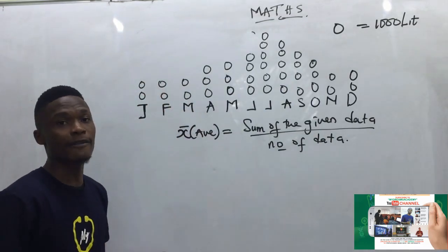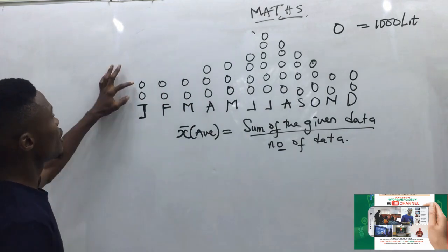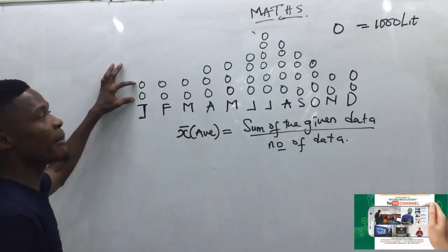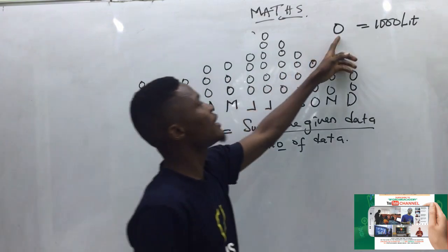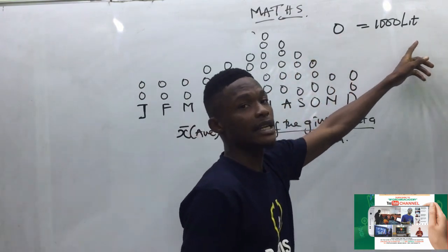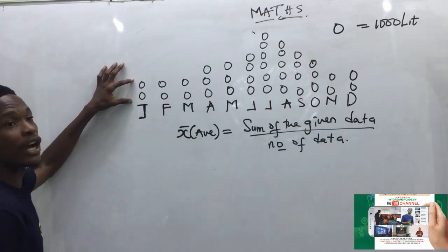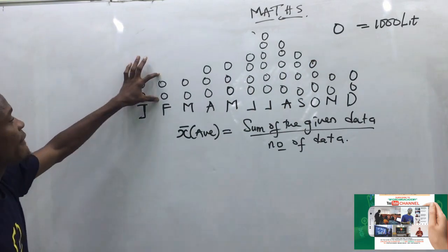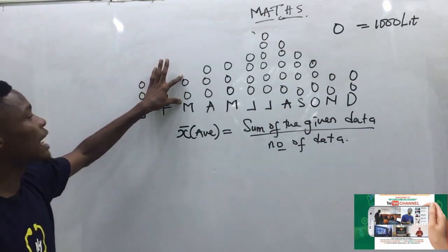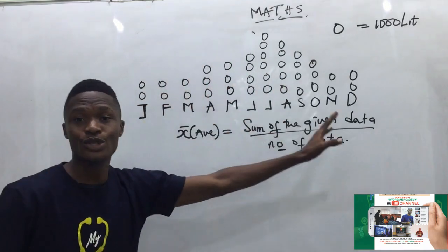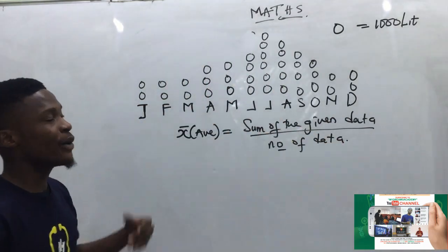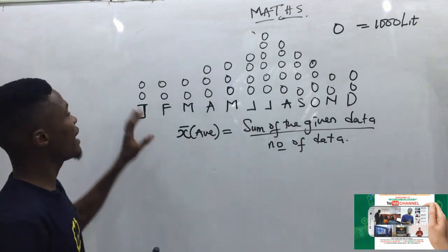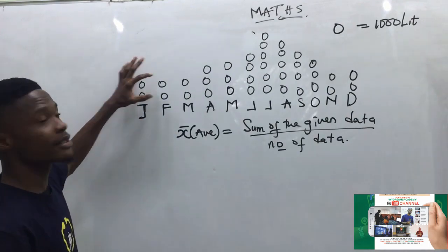In January we have two circles — remember one circle is 1,000 liters, so that means 2,000 liters. February: 2,000; March: 2,000; April: 3,000, and so on. In order not to waste time in the exam writing out each value, all you need to do is count the total number of circles.